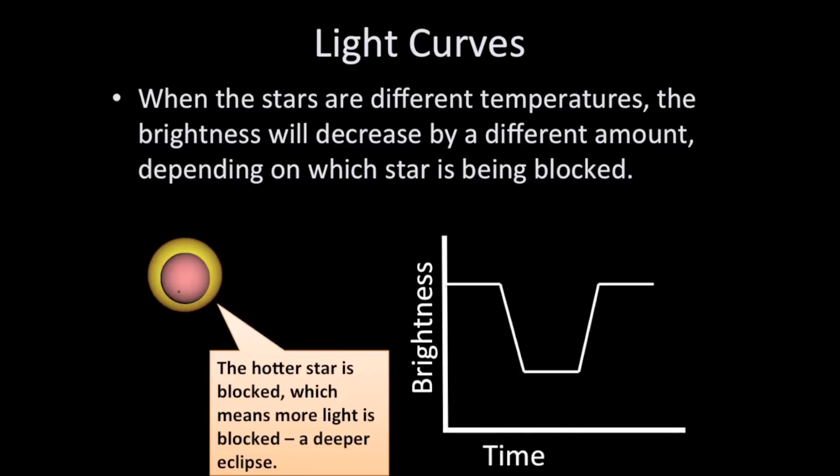When the red star blocks out the yellow star, it blocks out more light than when the yellow star blocks out the red one. And so the dip will be deeper when I block out the yellow star than when I block out the red one.